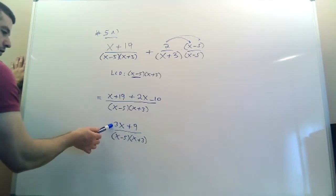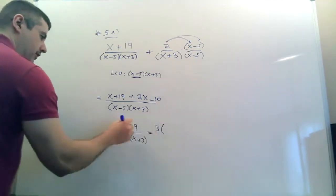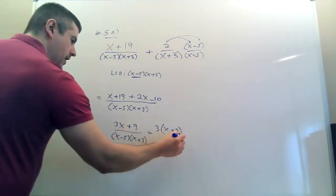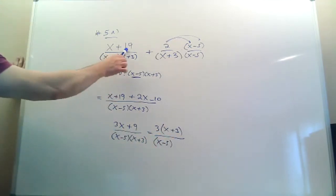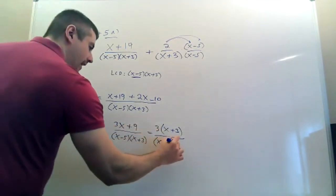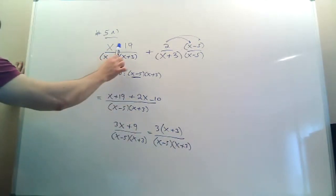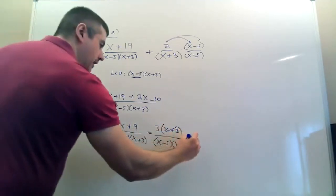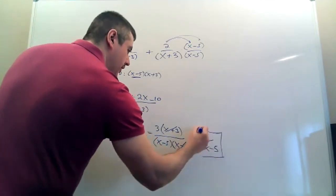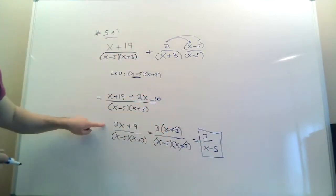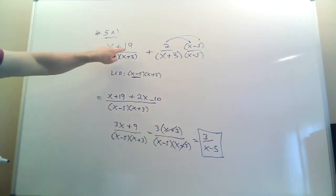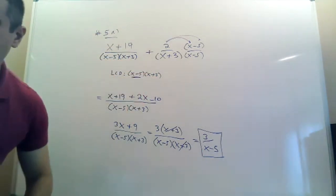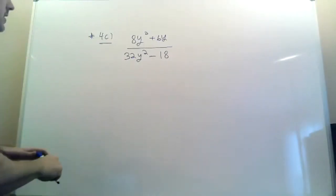Now you understand why I had the 19 there — I needed a 9 here and a 3 here to factor out the 3. That leaves you with 3 times (x plus 3): 3 times x is 3x, 3 times 3 is 9. If I didn't have a 19 I wouldn't have gotten a 9 and couldn't have factored and crossed out. Cross out the common factor (x plus 3), and you're done: 3 on top, (x minus 5) on the bottom. Everything in this question was carefully designed so that at the last step you could factor and cross out.